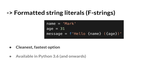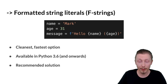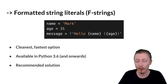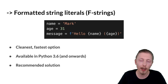F-strings are certainly the cleanest and fastest approach, and they are available in Python 3.6 and onwards. However, they are not backwards compatible, so you can only use them if you plan on using Python 3.6 or later — Python 3.8, which is what we're using in this course, is fine. This is my recommended solution. I recommend you always use this approach unless you need backwards compatibility, which is quite a rare edge case and is becoming less and less common.